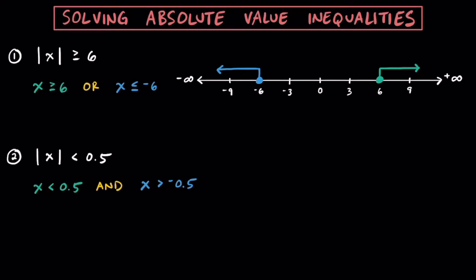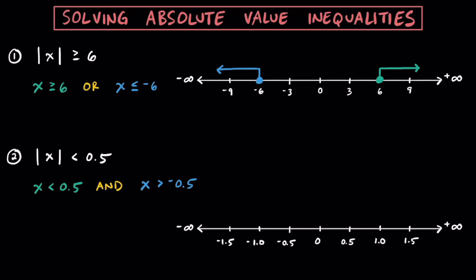Let's go ahead and graph this. We know X has to be less than 0.5, so put an open circle there. We also know X has to be greater than negative 0.5, so put an open circle there too. Since X has to be less than 0.5 but greater than negative 0.5, it's any values in between. This is true whenever you have that less than sign — it gives you an AND for the compound inequality. When you have greater than, it's an OR, and the arrows go in opposite directions.